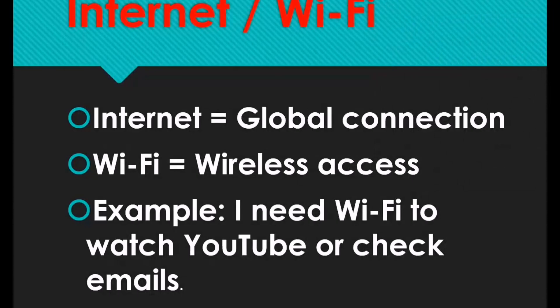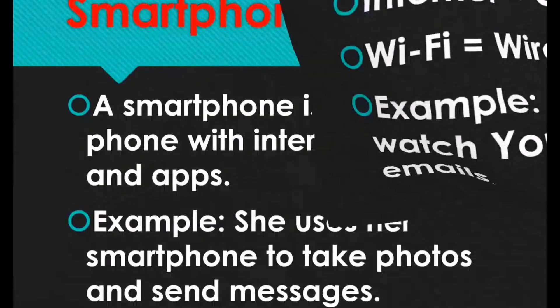The next is internet or Wi-Fi. Some people call it Wi-Fi, some call it Wi-Fi — whatsoever way you call it, it still means the same. Internet is a global connection while Wi-Fi is a wireless access. For example, I need Wi-Fi to watch YouTube or check emails. You cannot watch YouTube or check your emails without Wi-Fi — you need an internet connection.